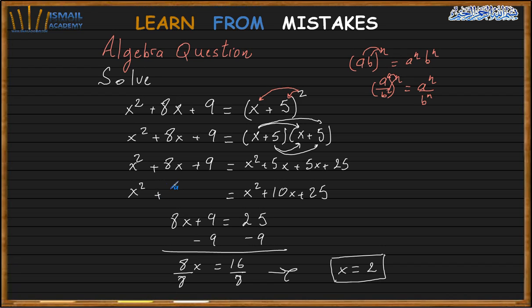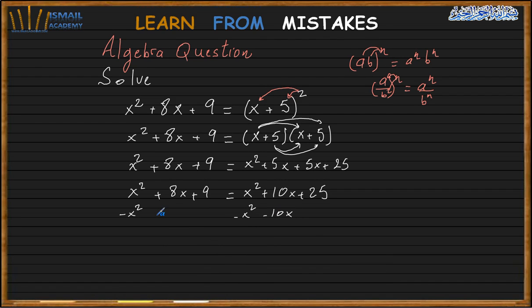So this is x squared plus 8x plus 9 equals x squared plus 10x plus 25. Subtract x squared and 9 from both sides. So I have 8x minus 10x equals 25 minus 9. So minus 2x equals 16. Now divide both sides by minus 2, so x equals minus 8.